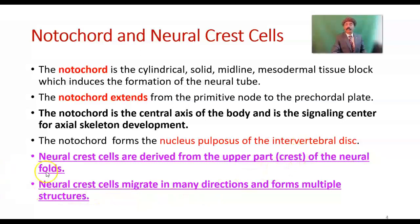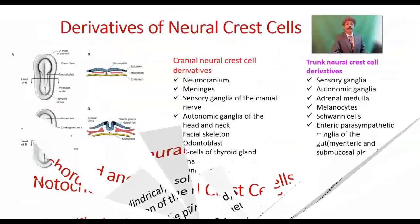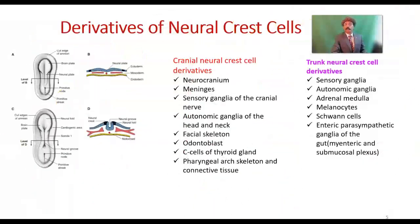What are neural crest cells? Neural crest cells are derived from the upper or crest part of the neural folds. Neural crest cells migrate in many directions and form multiple structures. There are two groups of neural crest cells — this is an arbitrary division but all are the same neural crest cells: cranial and trunk.